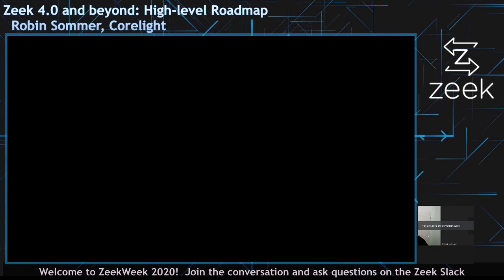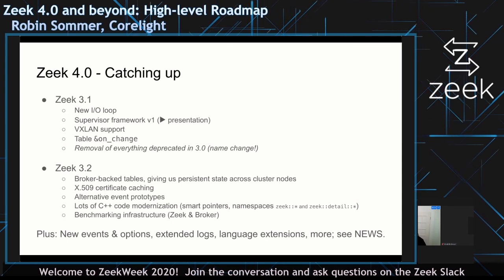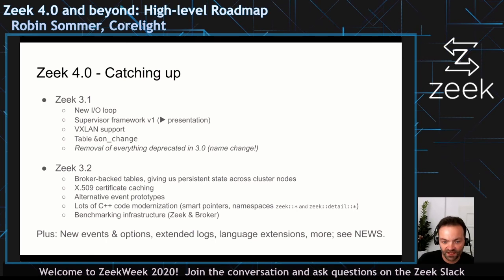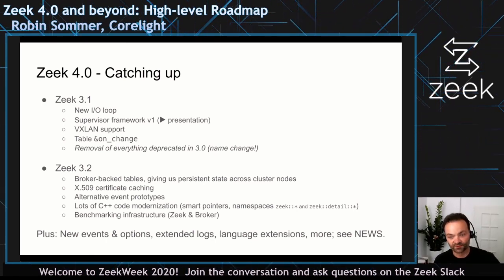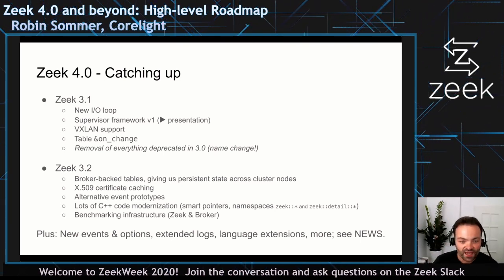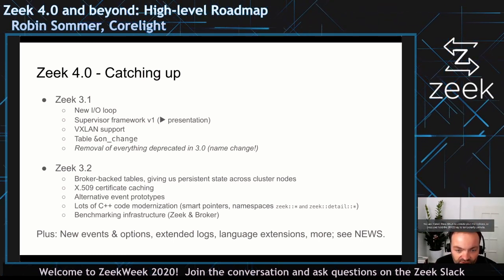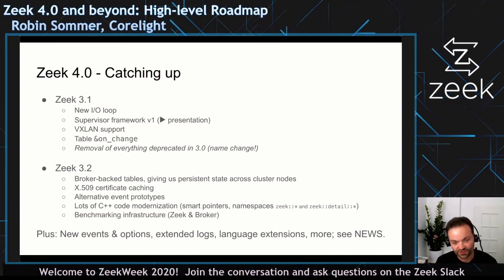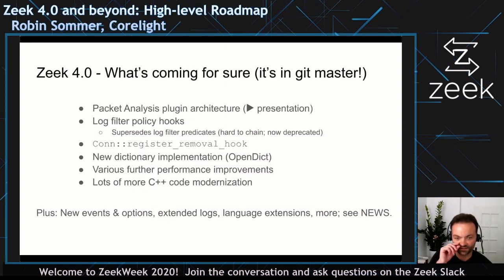We first deprecate something before we later remove a feature or change it in a non-backwards-compatible way. That applies to everything in the Zeek namespace. It does not apply to stuff in the ZeekDetail namespace — there we will be more liberal in making changes. It's still accessible, so we're not hiding what's in detail, but we don't make guarantees about it. Zeek 3.2 also came with a nice benchmarking infrastructure to find performance regressions. There's lots of smaller stuff too — events, options, synth logs, language extensions — and the NEWS file summarizes all of this.